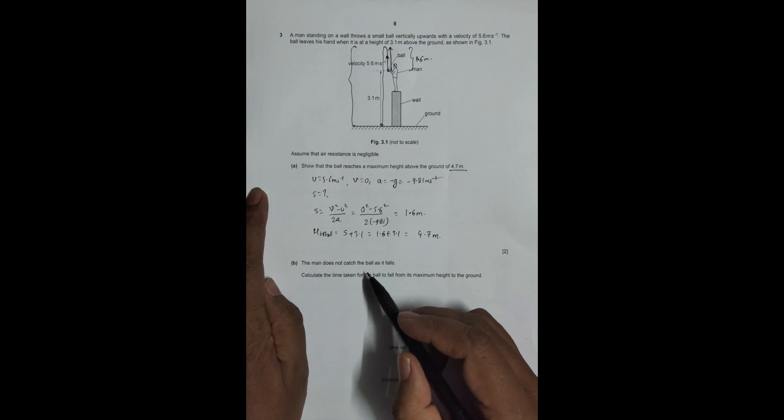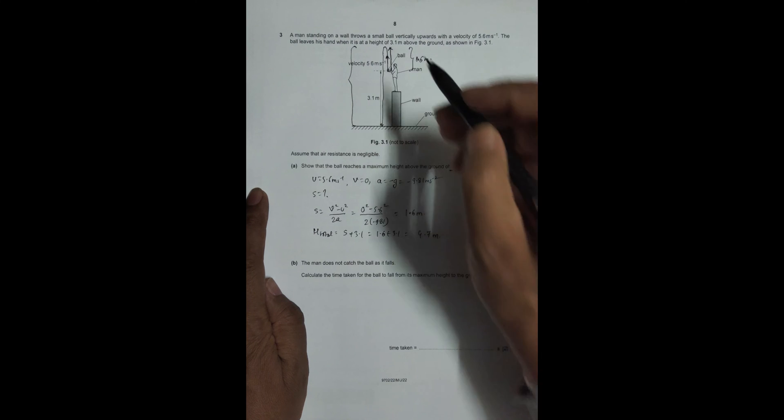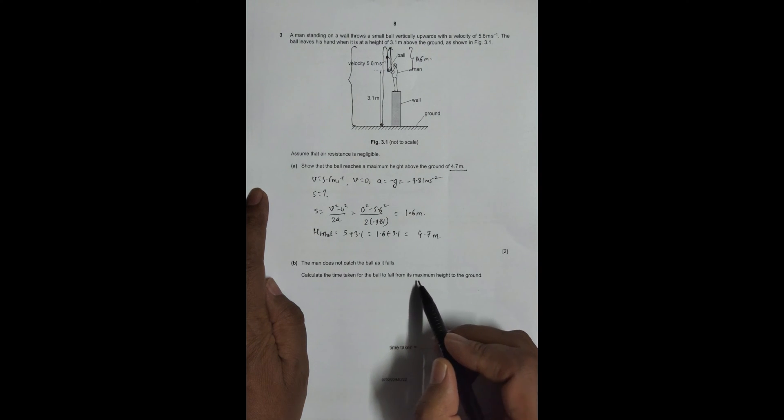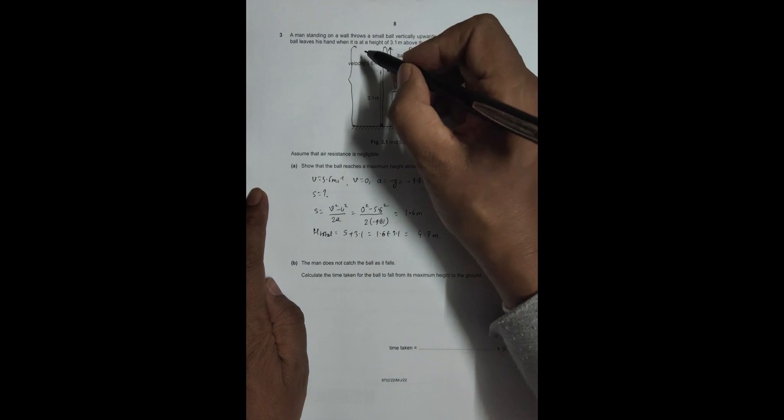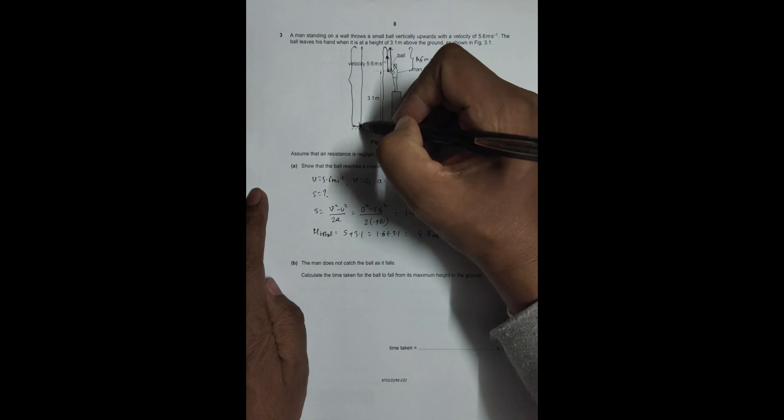Now the man does not catch the ball as it falls. Calculate the time taken for the ball to fall from its max height to the ground. So we have to find the time for this flight.